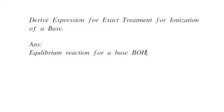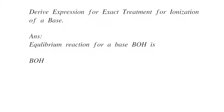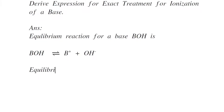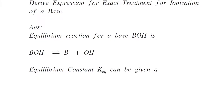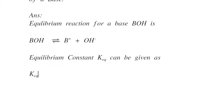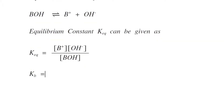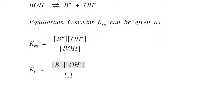The equilibrium reaction for a base BOH can be written as BOH giving B⁺ + OH⁻, where the equilibrium constant K_eq can be written as the ratio of products divided by reactants. So K_eq equals [B⁺][OH⁻] divided by [BOH]. We represent the base dissociation constant Kb as equal to [B⁺][OH⁻] divided by [BOH].